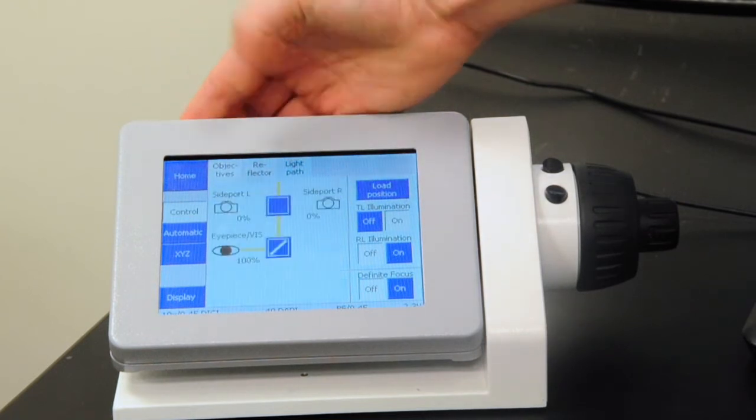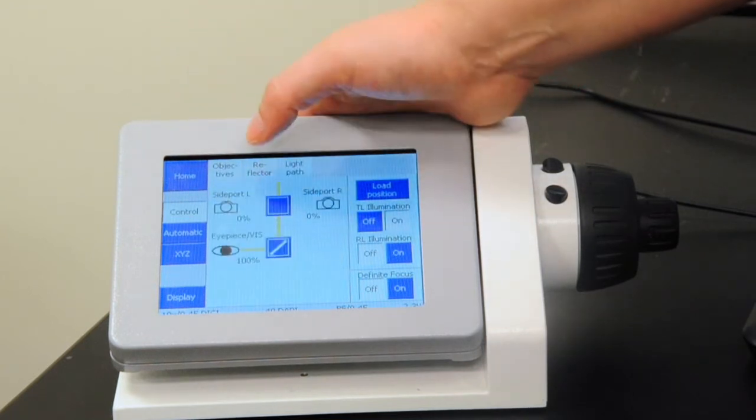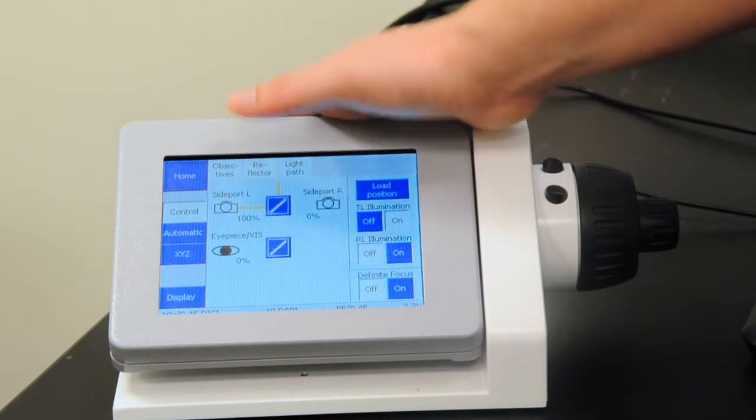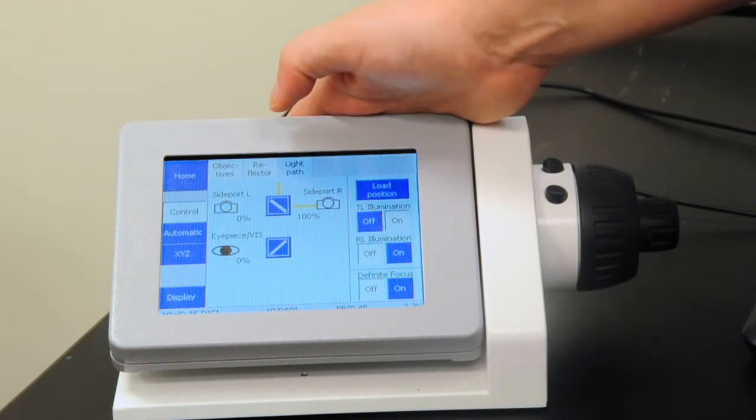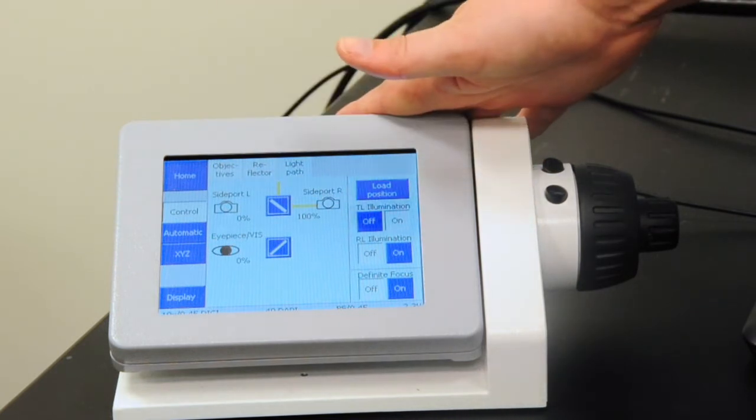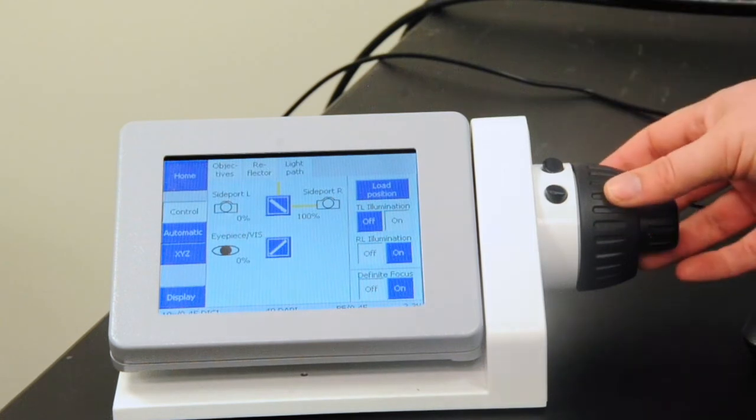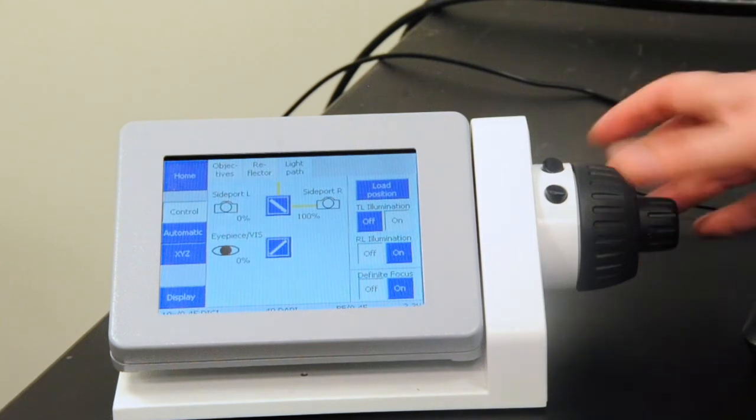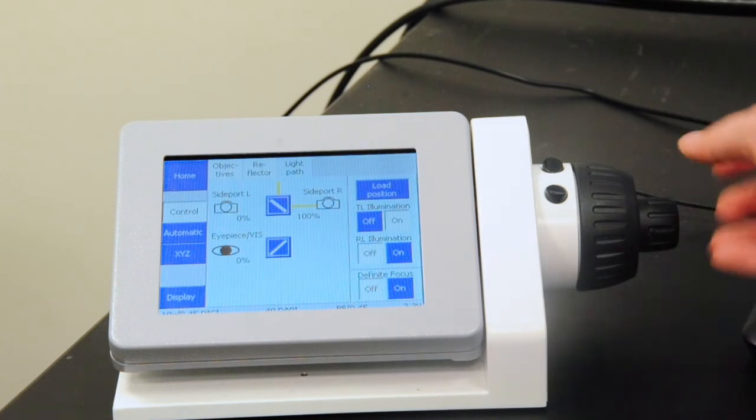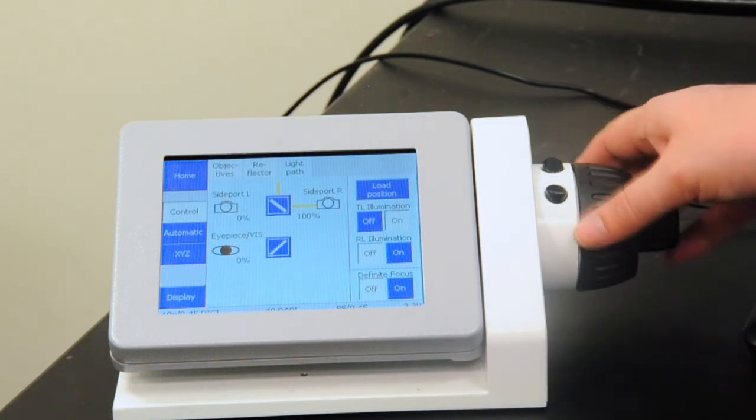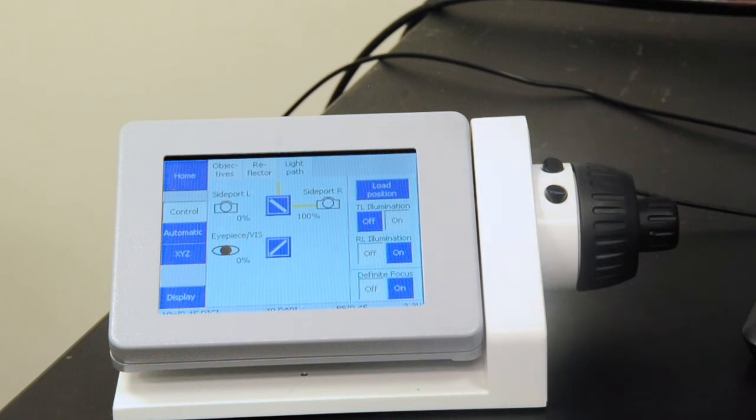And finally, in this, we have a light path where you can change where the light is going. But generally, it's much easier to do this via the software on the computer for a confocal microscope. Finally, on this, we have our coarse and fine focus so that once we have our sample where we want it, we can actually do our focus adjustment from here or in the software, and we don't have to leave sitting in front of the computer.